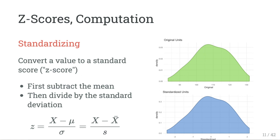One important thing about Z-scores is that standardizing does not change your distribution at all — it changes the values but not the shape. If you look at a variable before and after standardization, the distributions look the same. Standardizing did not make the distribution more normal. The only thing that changed is now the mean is zero and one standard deviation is one unit, whereas the original was in its original units.